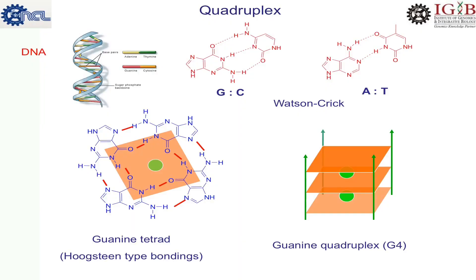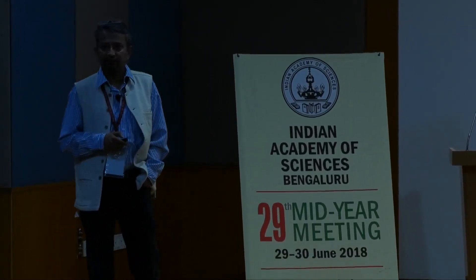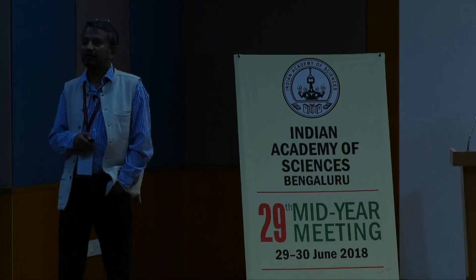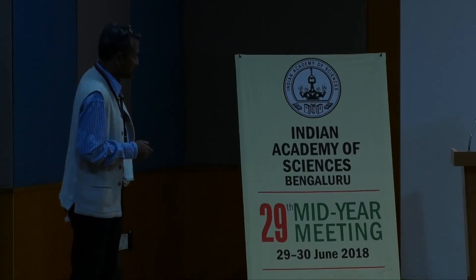The deviation is that guanine, if coming into a certain orientation in the presence of some monovalent cation — say sodium or potassium — can form a tetrad via a different kind of hydrogen bond known as a Hoogsteen hydrogen bond. These tetrads stack together to give a four-stranded nucleic acid structure, known as a DNA or RNA quadruplex. So, the usual structure is duplex; this four-stranded structure is the quadruplex.